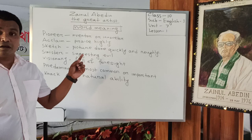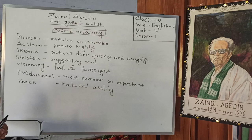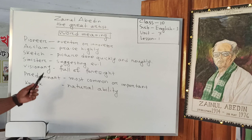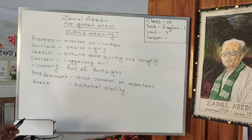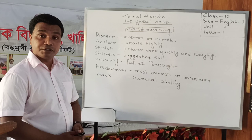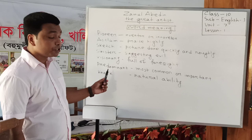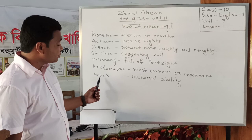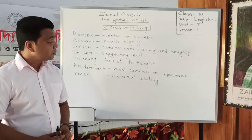First of all, the word 'pioneer' means inventor or innovator. 'Acclaim' means praise highly. 'Sketch' means a picture done quickly and roughly. 'Sinister' means suggesting evil or danger. 'Visionary' means full of foresight. 'Predominant' means most common or important. And the last word is 'knack,' which means a natural ability. So these are the hard words for you — write them on your note copy.